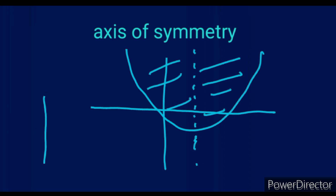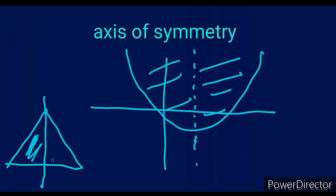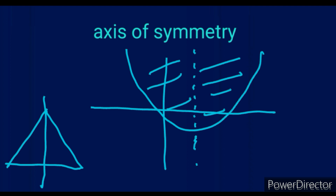When you talk of something being symmetric, let's say we've got a triangle. This part of the triangle is symmetric to this part on this line, so we call this line the axis of symmetry. To keep it simple, the axis of symmetry is a line that divides the graph into two equal parts.